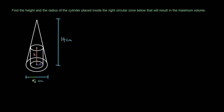The question is: find the height and the radius of the cylinder placed inside the right circular cone below that will result in the maximum volume. Here we have a cone and inside this cone is a cylinder. We want to change the dimensions of the cylinder so that the volume is the maximum. The cone has a height of 14 cm and a width of 8 cm.